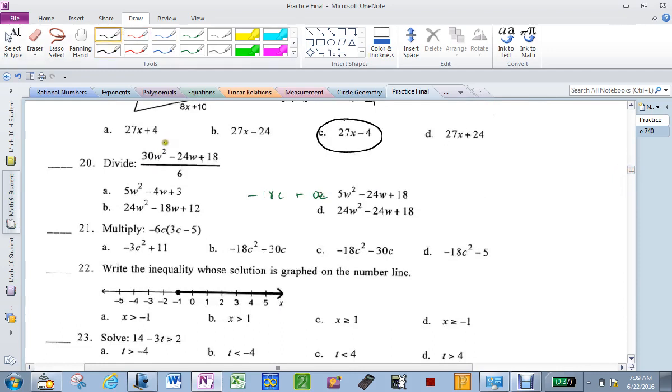Divide. Divide each one. 30 divided by 6, 5w². Negative 24 divided by 6, negative 4w. 18 divided by 6, positive 3. 5w minus 4w plus 3.